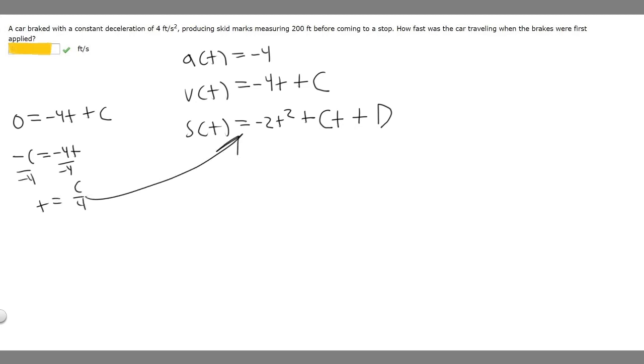What we're going to want to do is plug C over 4 into this function for t, and whatever value our C is is going to be our answer. We can disregard D because it's going to be 0. We're going to set the position function equal to 200. So 200 equals minus 2 times C over 4 squared plus C times C over 4.